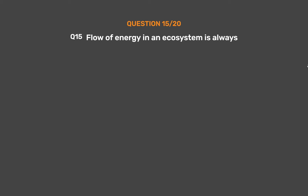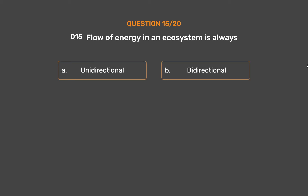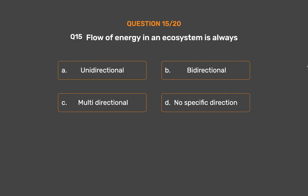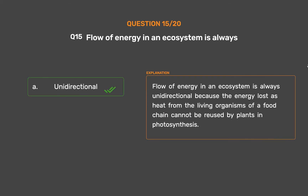Question number 15: Flow of energy in an ecosystem is always — Option A: Unidirectional, Option B: Bidirectional, Option C: Multidirectional, Option D: No specific direction. The correct answer is Option A, Unidirectional. Flow of energy in an ecosystem is always unidirectional because the energy lost as heat from living organisms of a food chain cannot be reused by plants in photosynthesis.